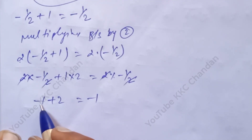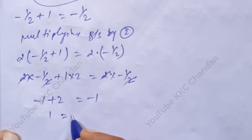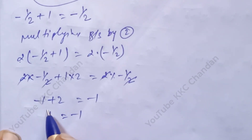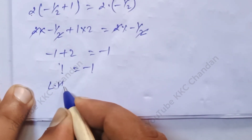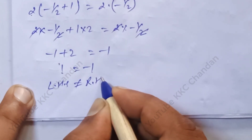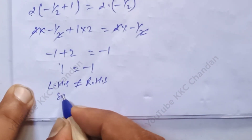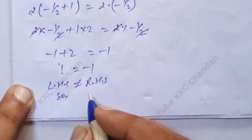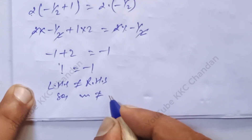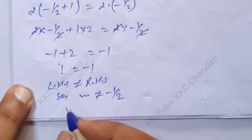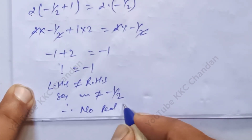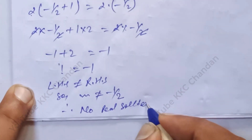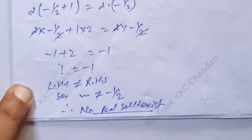Minus 1 plus 2 gives 1, which is not equal to minus 1. So LHS does not equal RHS. Therefore no real solution exists.